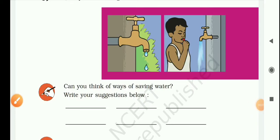Welcome students. Today we are going to discuss a few questions from the chapter Drop by Drop. The first question is, can you think of ways of saving water? Write your suggestions below.